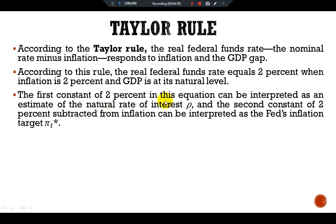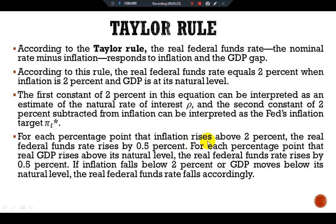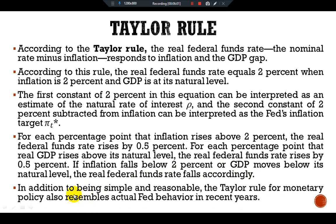The first constant of two percent in this equation can be interpreted as an estimate of the natural rate of interest, rho. The second constant — two percent subtracted from inflation — can be interpreted as the Fed's inflation target. For each percentage point that inflation rises above two percent, the real federal funds rate rises by 0.5 percent. Similarly, for each percentage point that real GDP rises above its natural level, the real federal funds rate rises by 0.5 percent. If inflation falls below two percent or GDP moves below its natural level, the real federal funds rate falls accordingly.